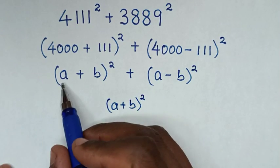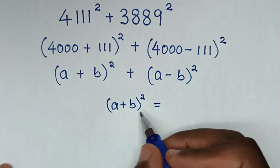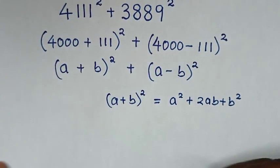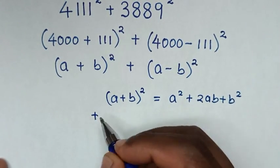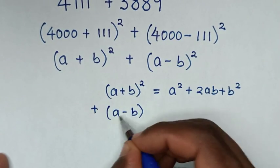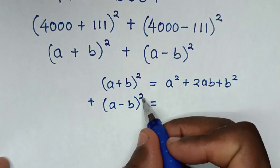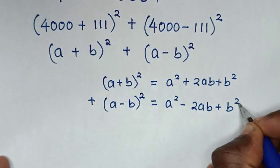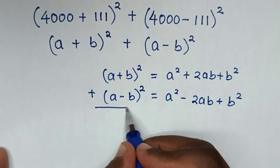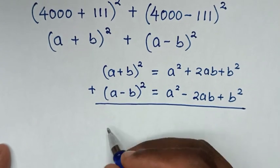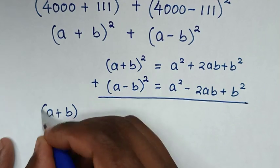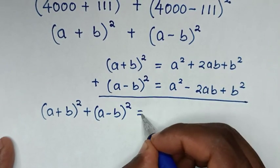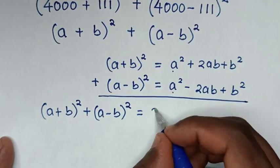We expand: (a+b)² equals a² + 2ab + b². Then (a−b)² equals a² − 2ab + b². The sum of the two formulas, (a+b)² + (a−b)², equals 2a² — since +2ab and −2ab cancel — plus 2b².